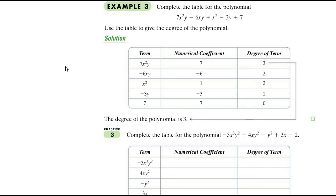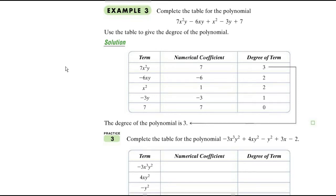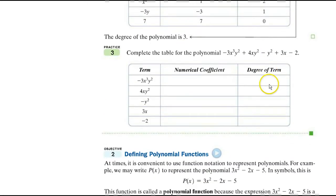I'd want you to complete the table for the polynomial. First, how many terms? One, two, three, four, five. They have them all listed here. What's the numerical coefficient? A seven, a negative six, a one, a negative three, a seven. And the degree of this term is three. This one is two, two, one, zero. So, the highest degree is three. And you'll have some practice on this.